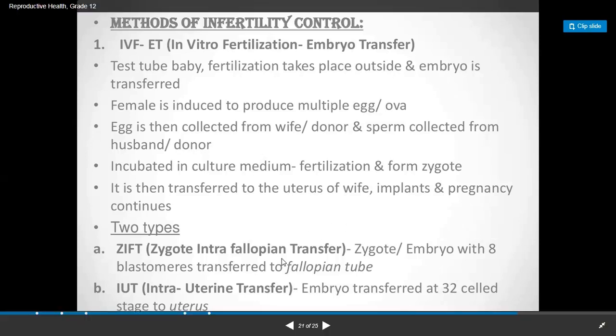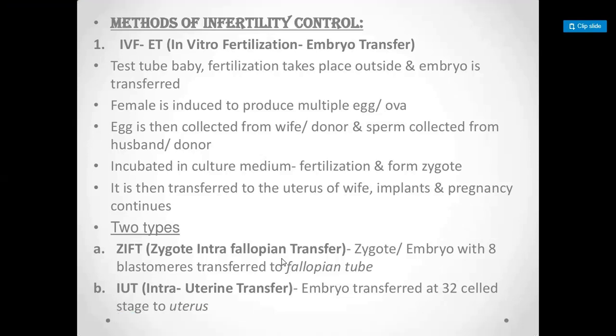First, a zygote is formed and developed into an embryo. If the embryo cannot use the fallopian tube, it is transferred directly. This method is called IUT — Intra-Uterine Transfer — where the embryo is transferred at the 32-cell stage.